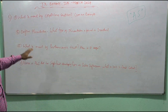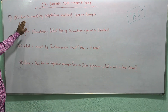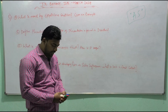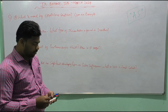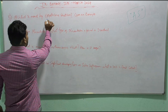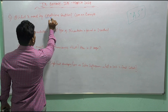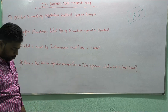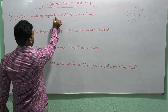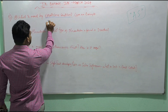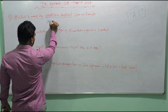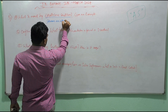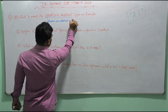Let's see what the fifth question is. 'What is meant by epipetalous condition? Give an example.' Now, 'epi' means above or upon, and 'petal' means petals. Epipetalous condition means stamens are attached to the petals.